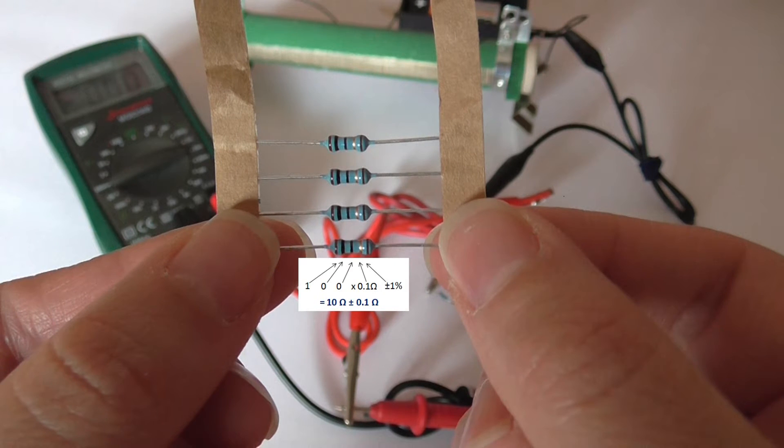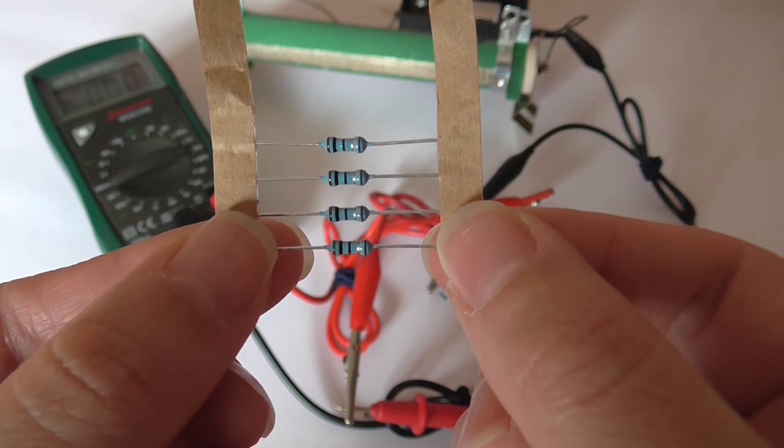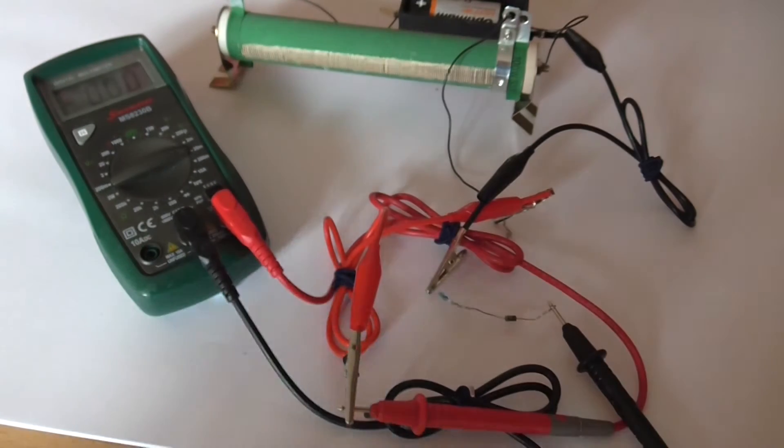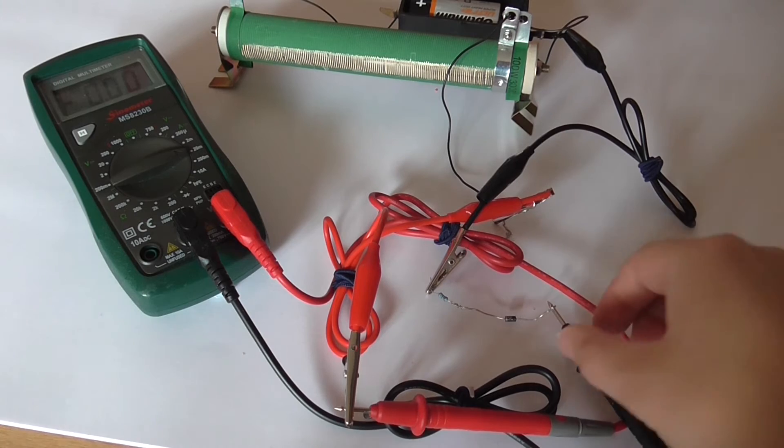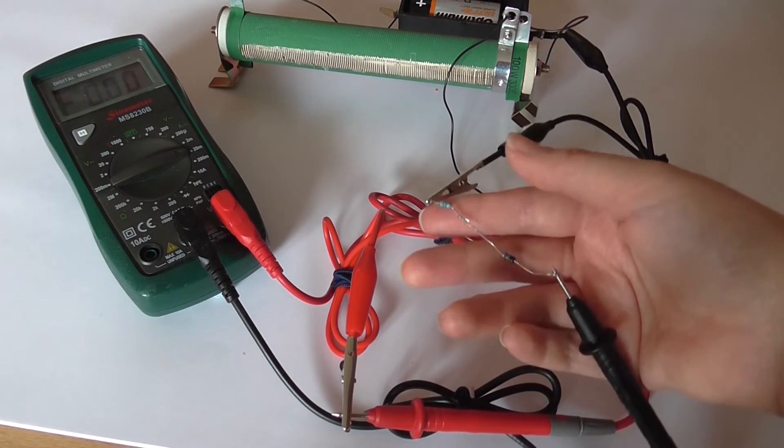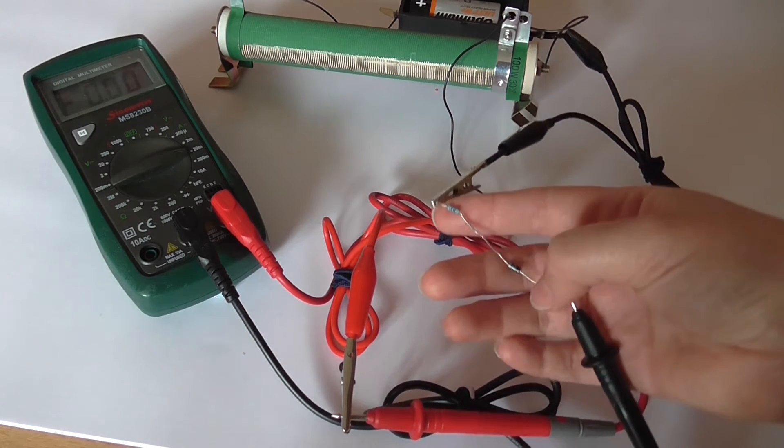This is what the 10 ohm resistor looks like. And this is the diode. Notice the silver band. This is the cathode.